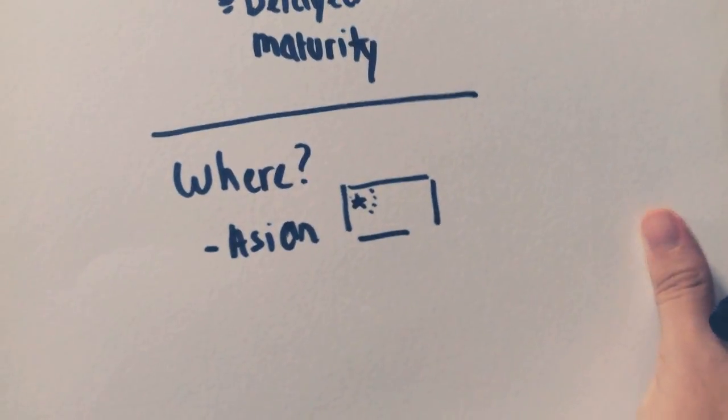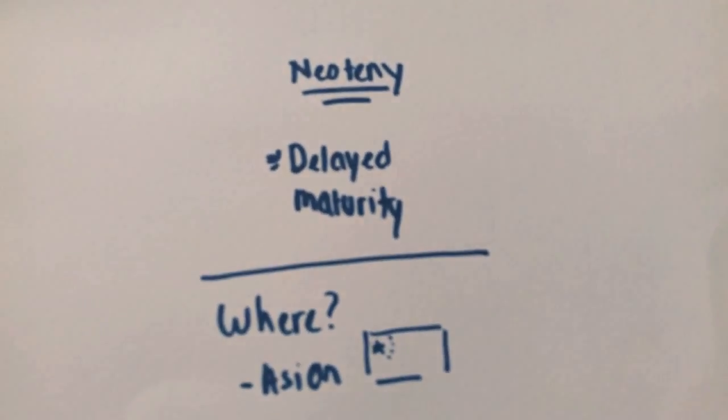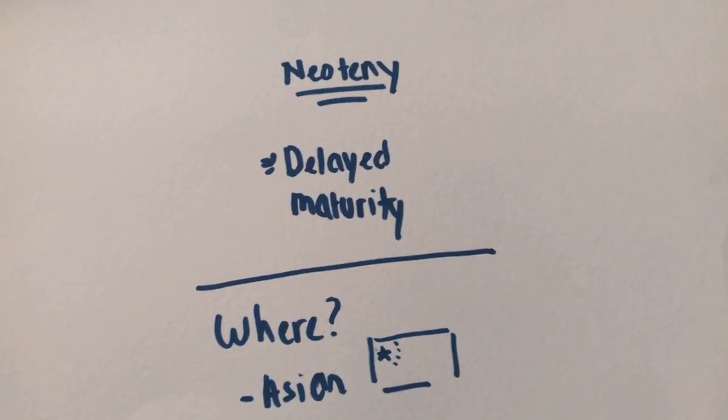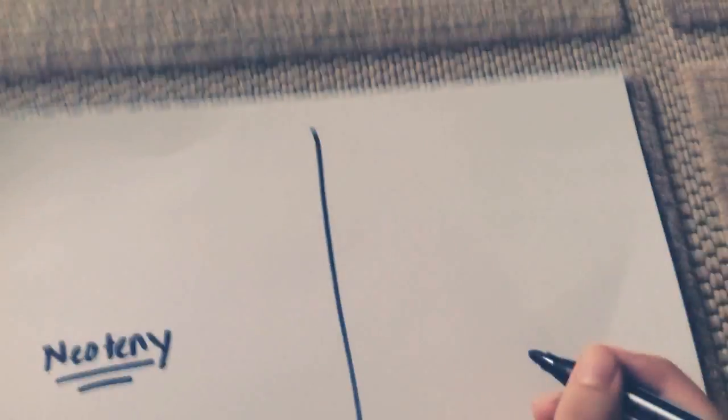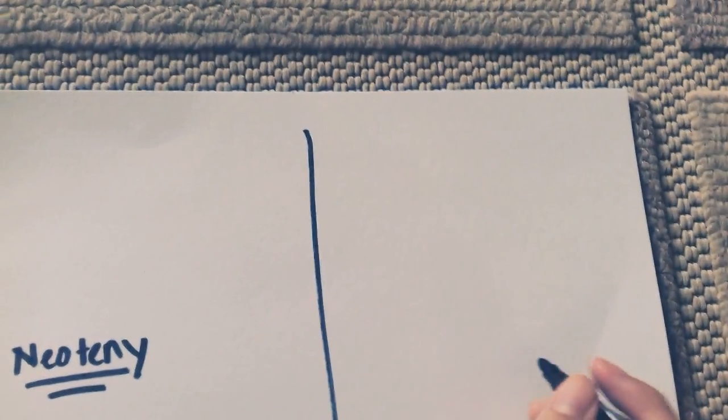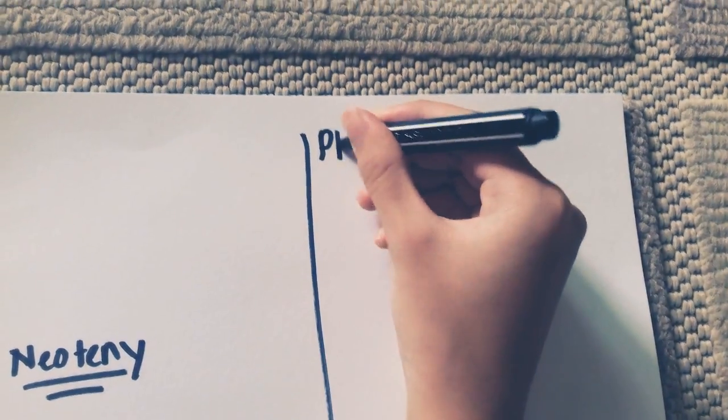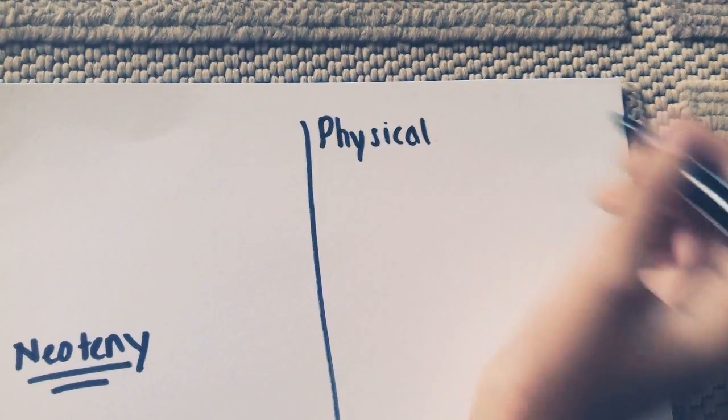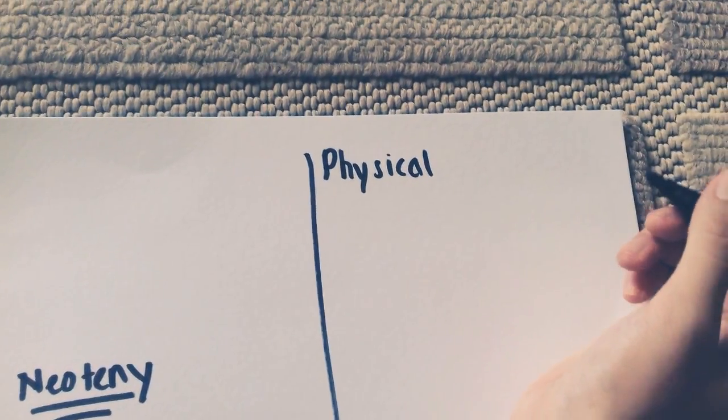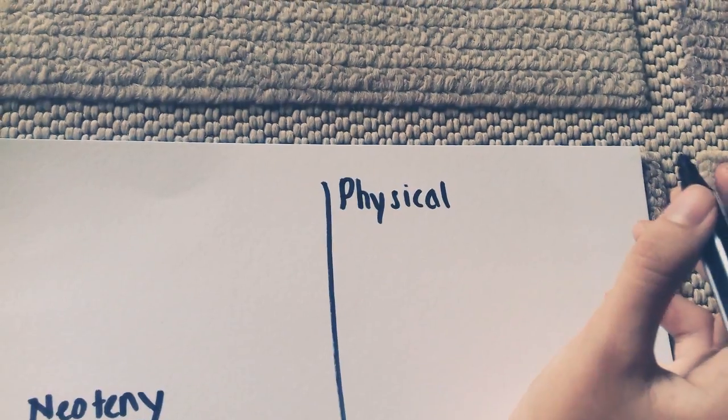Now, why would I say this? Well, let us get on to the traits of neoteny. Now there are two kinds of neoteny. First, I'm going to talk about physical neoteny. There are some physical traits of neoteny which makes it distinguishable among people.